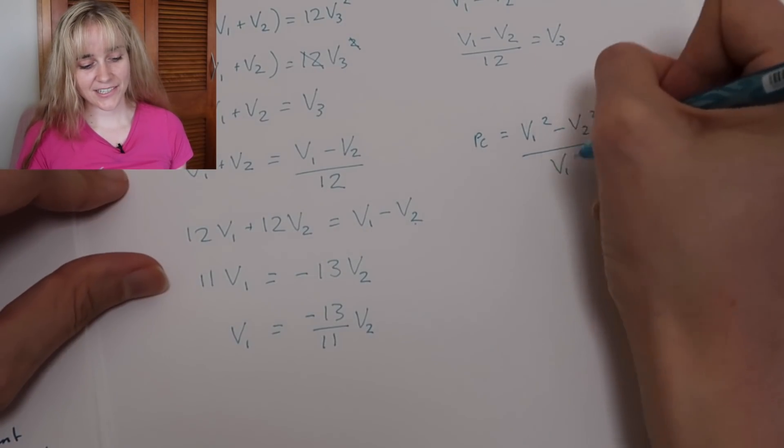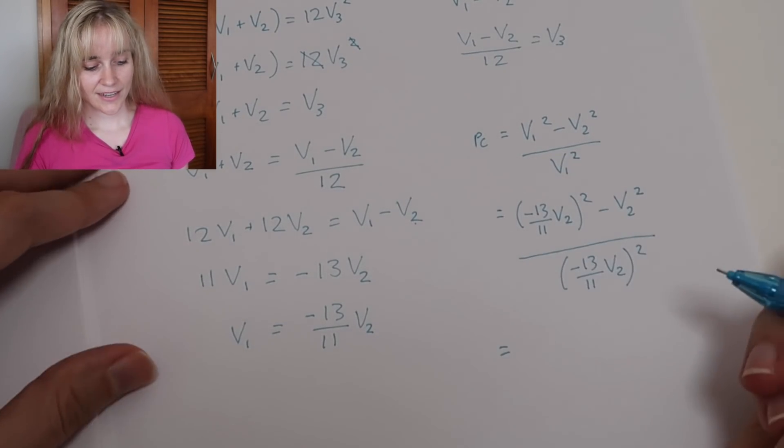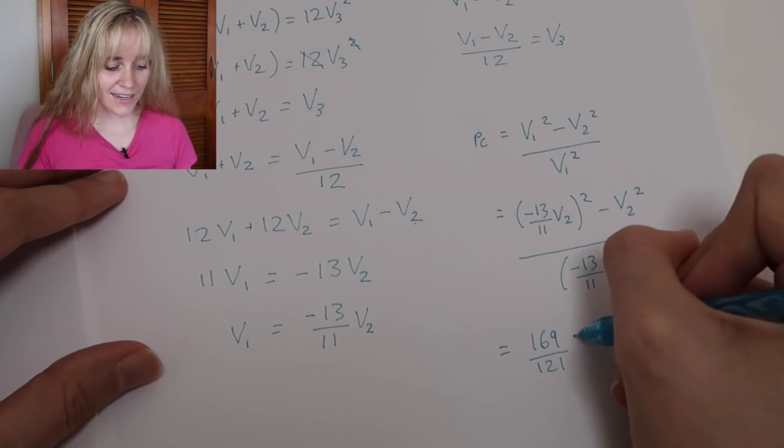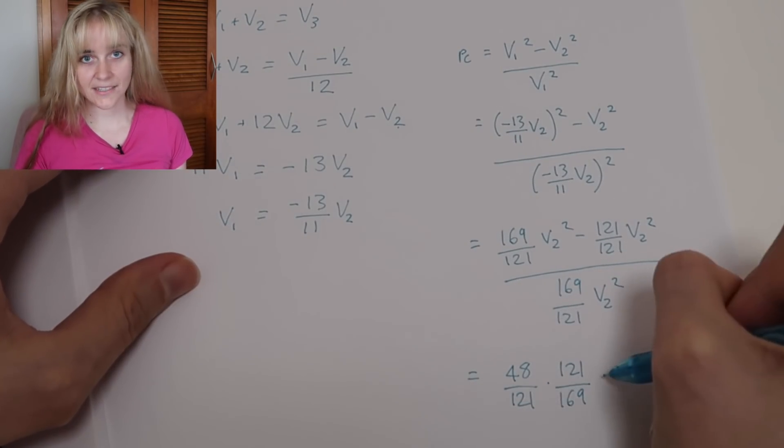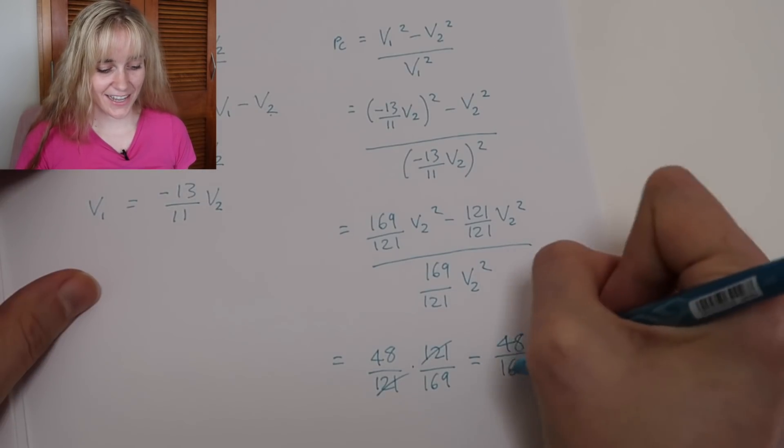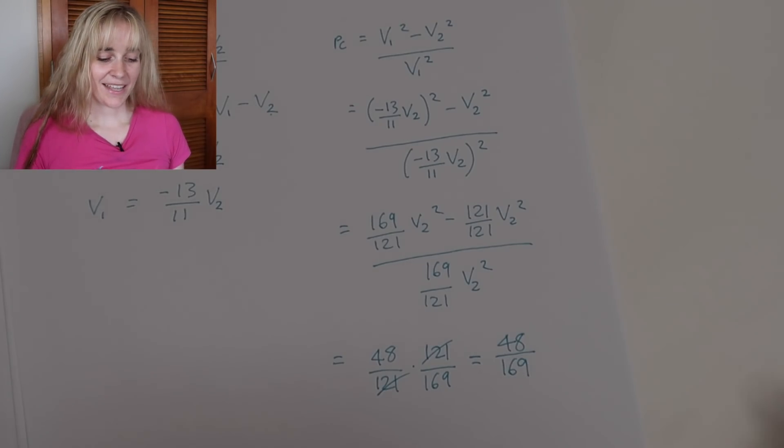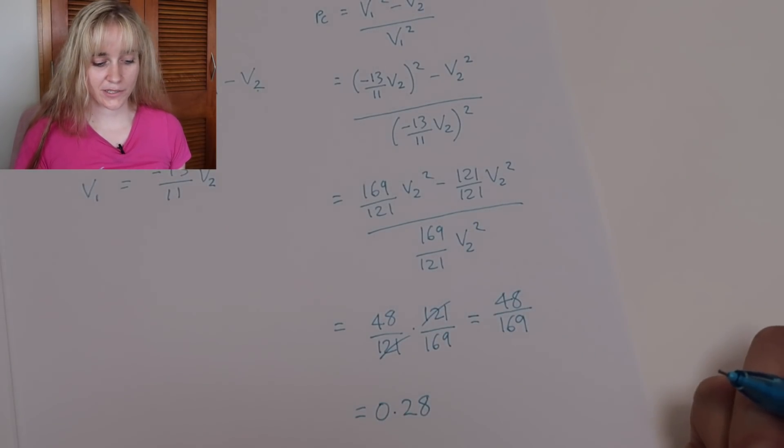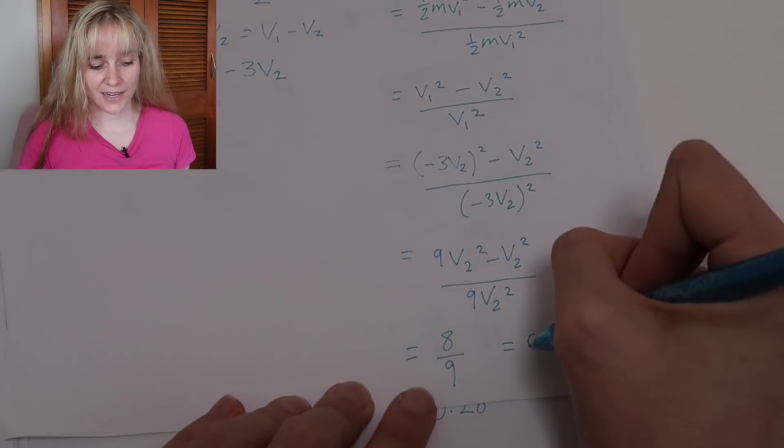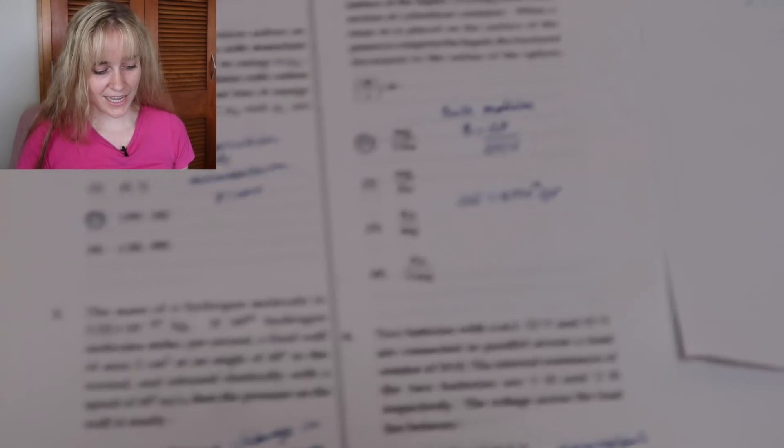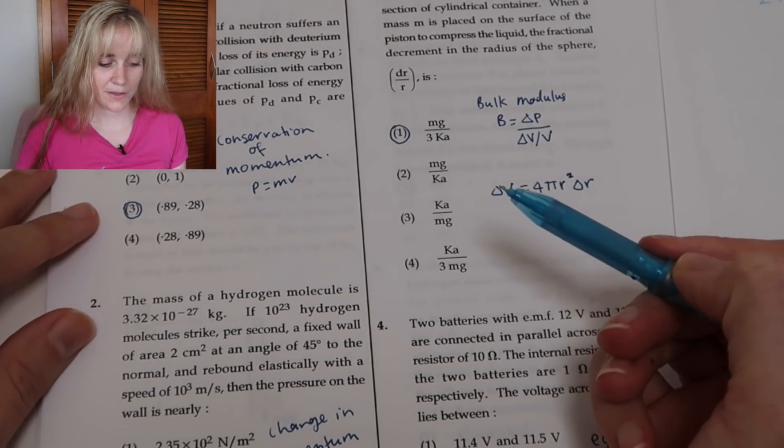Then our fractional loss of energy, very similar thing, but now we're subbing in minus 13 over 11 times v2 as being our value of v1, and this algebra gets a little bit more tricky. But we end up doing some fractions and we get 48 over 169 as our fraction there. Now because the question is asking for this in terms of decimals, which makes it harder, we have to work that out as a decimal and that will be 0.28 to two decimal places. So we need to go back and find the other one in decimals too and that would be 0.89. So then we just need to look at our answers. We have 0.89 for the first one, 0.28 for the second one, and that gives us the third option as being correct there.